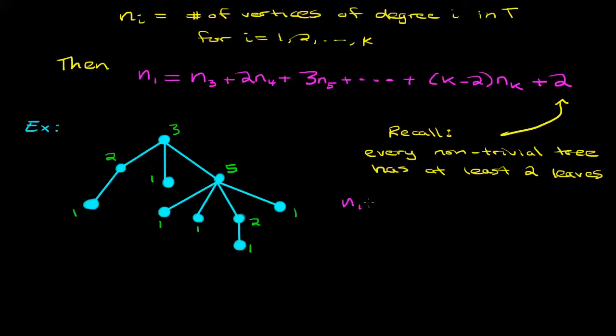Well, n_1 is 6 because there are 6 degree 1 vertices, n_2 is 2, n_3 is 1, n_4 is 0 (there's nothing of degree 4), and n_5 is 1. Since the maximum degree is 5, now we're done listing all of our n's.